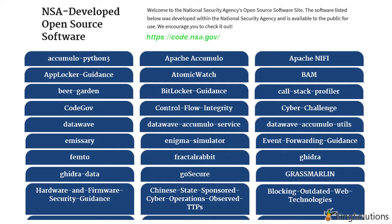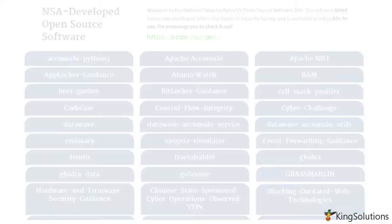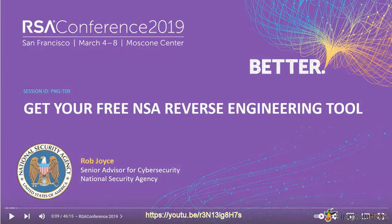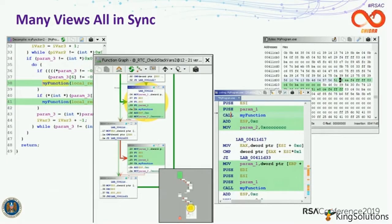What is Ghidra? Ghidra is just one of the many open source software projects developed within the National Security Agency. They announced the release of Ghidra at the RSA conference in January 2019. Ghidra is a multi-platform reverse engineering framework that runs on all the major operating systems — that's Linux, Windows, and Mac OS.